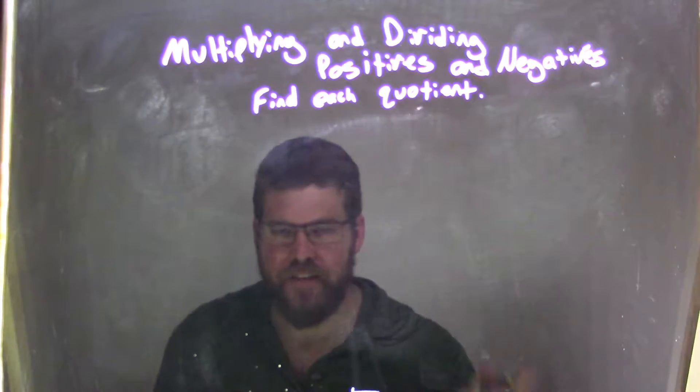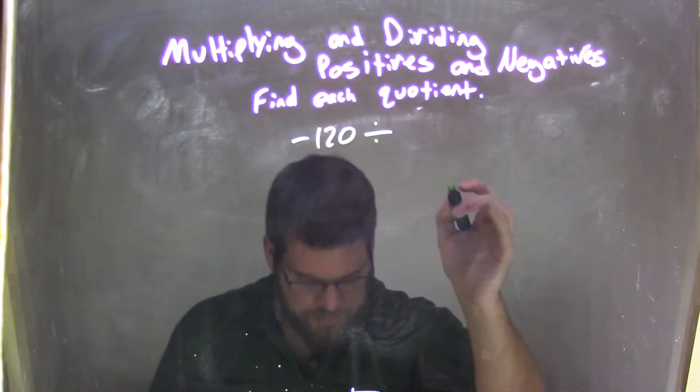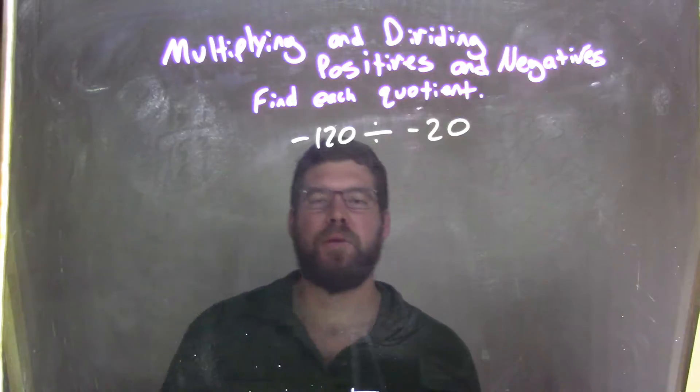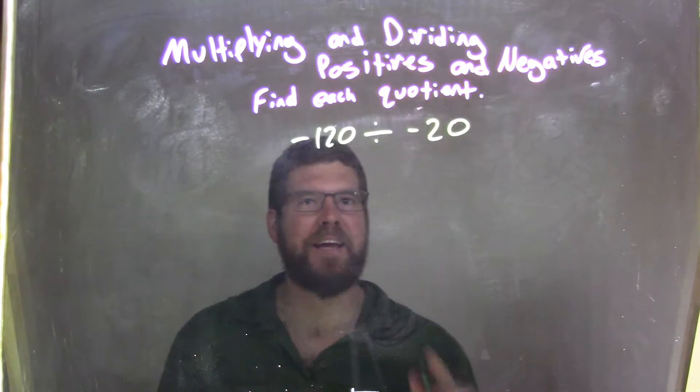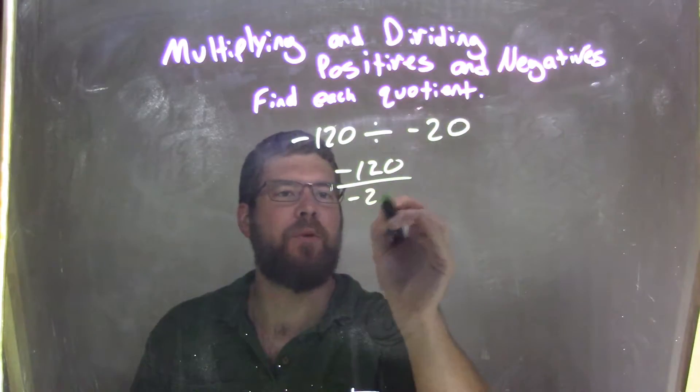So, if I was given this quotient, negative 120 divided by negative 20, okay? Well, negative 120 divided by negative 20, I can rewrite that to be negative 120 over negative 20.